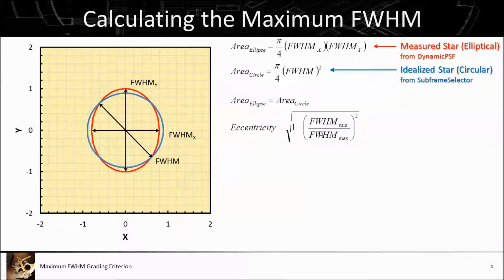The subframe selector also tells us the eccentricity, which is the minimum of the two FWHM values divided by the maximum, squared — subtract from 1, take the square root, and there's your eccentricity. So we have the eccentricity and the FWHM of the equivalent-area circle that goes with the ellipse.